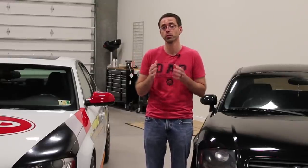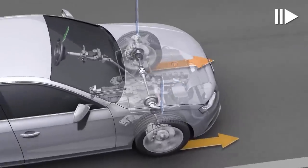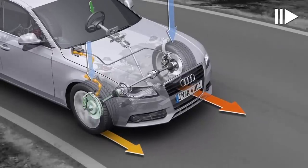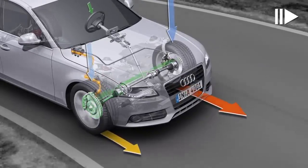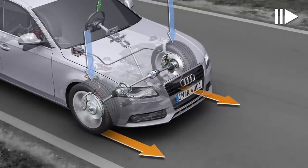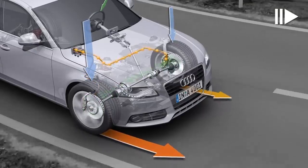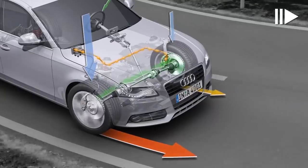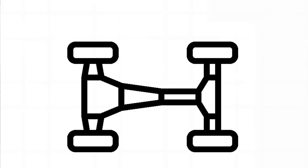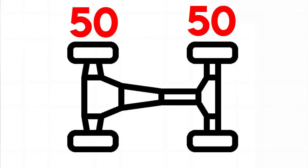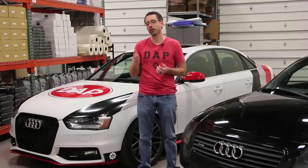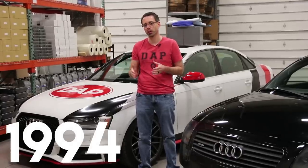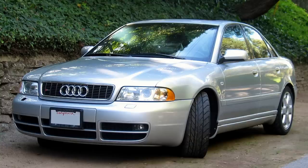This can create an issue where if you lose traction, all the power goes to the wheel with no traction, meaning your car won't go anywhere. They combat this by adding EDL — electronic differential lock — which uses the ABS system to engage the brakes on the free-spinning wheel, ensuring power goes to the wheel that has traction. Generation 4 has a 50-50 split with the ability to send 80% of the power to the front or rear. This system came out in 1994 but was much more widespread on later models starting with the B5 S4 in 1997, ranging up to around 2007.